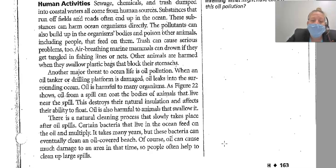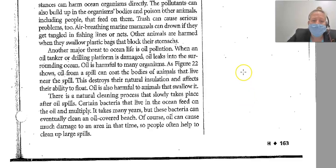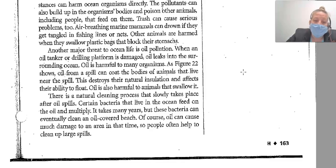Trash causes serious problems too — air-breathing marine mammals can drown if tangled in fishing lines or nets, and other animals are harmed when they swallow plastic bags that block their stomachs. Another major threat is oil pollution. When an oil tanker or drilling platform is damaged, oil leaks into the surrounding ocean, coating the bodies of animals and destroying their natural insulation and ability to float. Oil is also harmful to animals that swallow it. Certain bacteria in the ocean feed on the oil and multiply, and it takes many years for this bacteria to eventually clean an oil-covered beach, so people often help clean up large spills.